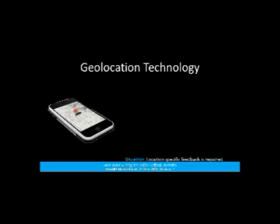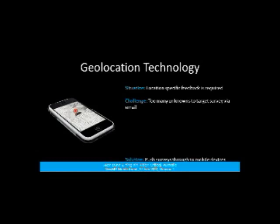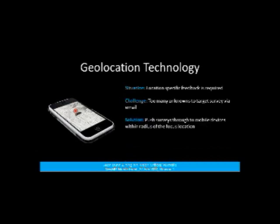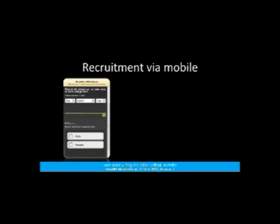The next example is geo-location technology. Location-specific feedback is required at an event — say a concert — with a transient population. The challenge is too many unknowns to target via email or traditional means. The solution is using geo-location technology to target people that enter into a certain radius of the focal point. At the moment, this is only available through an application — respondents need to be a member of an app they've signed up for, which can then push a notification that a survey is available about the event they're attending.